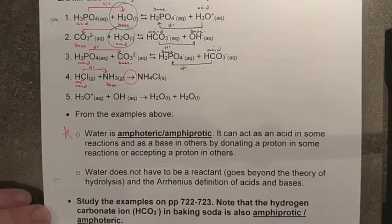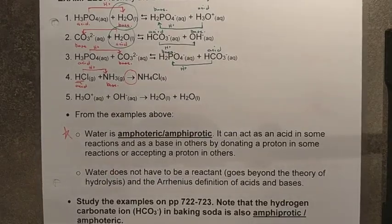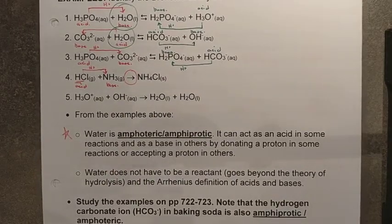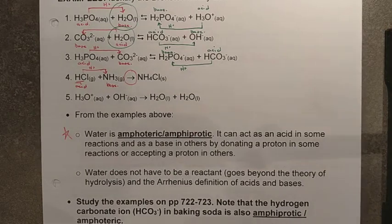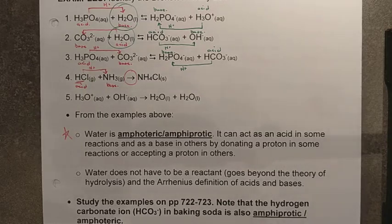Okay, so there you go. That's the first part here for Bronsted-Lowry acids and bases. We will get into more of this in the next lesson where we start taking a look at the five-step method to predict an acid-base reaction.